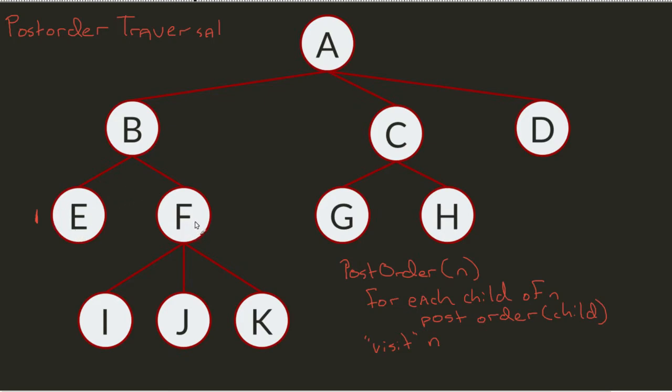Then I come to F. Well, once again, F has children. So F is not my second traversal. It's actually going to be its children. And then since these have no leaves, I can't go deeper. I go to the next child. The next child has no children, so it is the next visit. And then K.